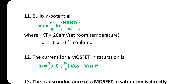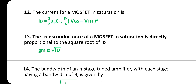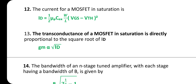The current for a MOSFET in saturation is: I_D = (1/2) × μ_p × C_ox × (W/L) × (V_GS − V_th)². This is for a P-type MOSFET. The transconductance of a MOSFET in saturation is directly proportional to the square root of I_D.